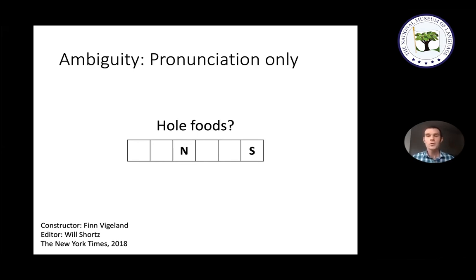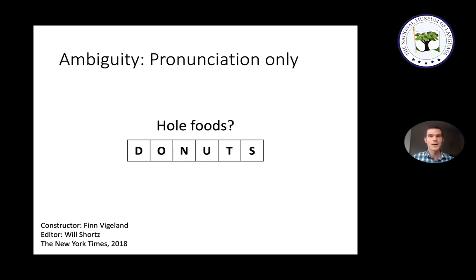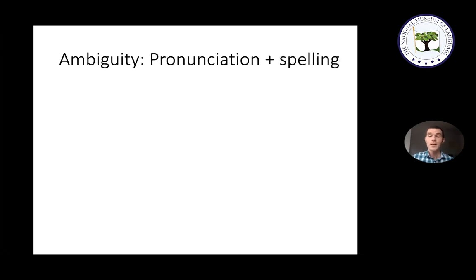Another example is the clue 'Whole Foods,' which sounds the same as the grocery store but is spelled differently. Here the clue means foods with holes in them — namely, donuts. Both of these clues make you realize that something you never thought was ambiguous actually is. For instance, when you hear 'whole foods,' it could mean the grocery store, which is meant to convey a healthy lifestyle, or it could mean a type of food that is not especially conducive to a healthy lifestyle.